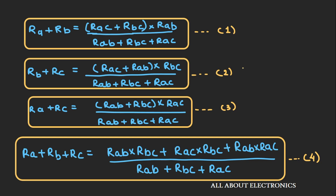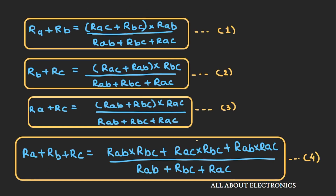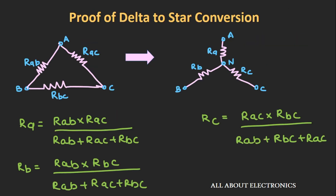Similarly, subtracting equation 2 from equation 4, we get the expression for resistor RB: RB equals RAB multiplied by RBC divided by (RAB plus RBC plus RAC). And subtracting equation 3 from equation 4, we get RC equals RAC multiplied by RAB divided by (RAB plus RBC plus RAC). In this way, we got three expressions for the delta-to-star conversion.